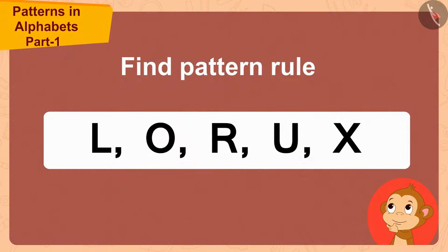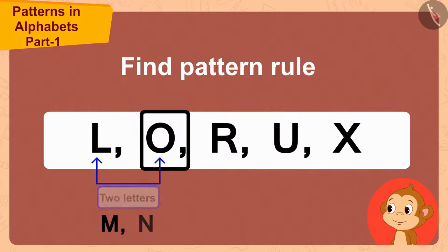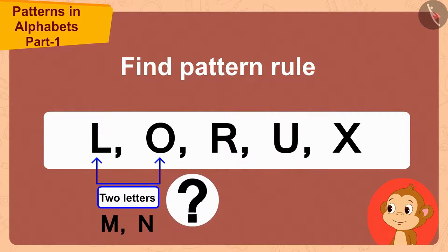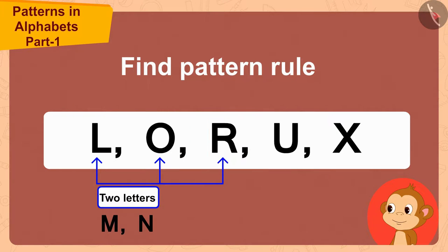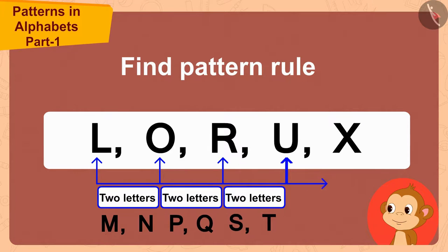The first letter of this pattern is L, and the second letter is O. The difference between these letters L and O is of two letters. And how many letters difference is there between these letters O and R? Exactly two letters. Thus, the rule of this pattern is the difference of two letters between each letter and the letter preceding it.